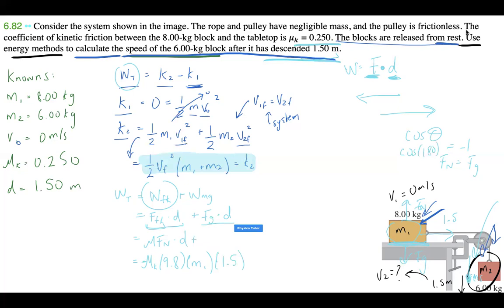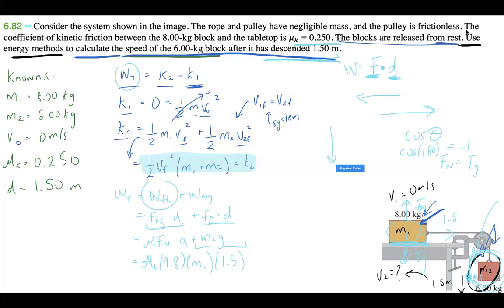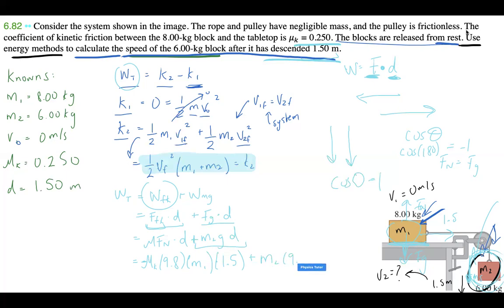For work done by gravity, the force is m2·g downward, and the displacement is also downward, so cos(0°) = 1. Therefore work by gravity is positive: m2·g·d = m2 × 9.8 × 1.5. If m2 descends 1.5 meters then m1 also moves 1.5 meters horizontally.